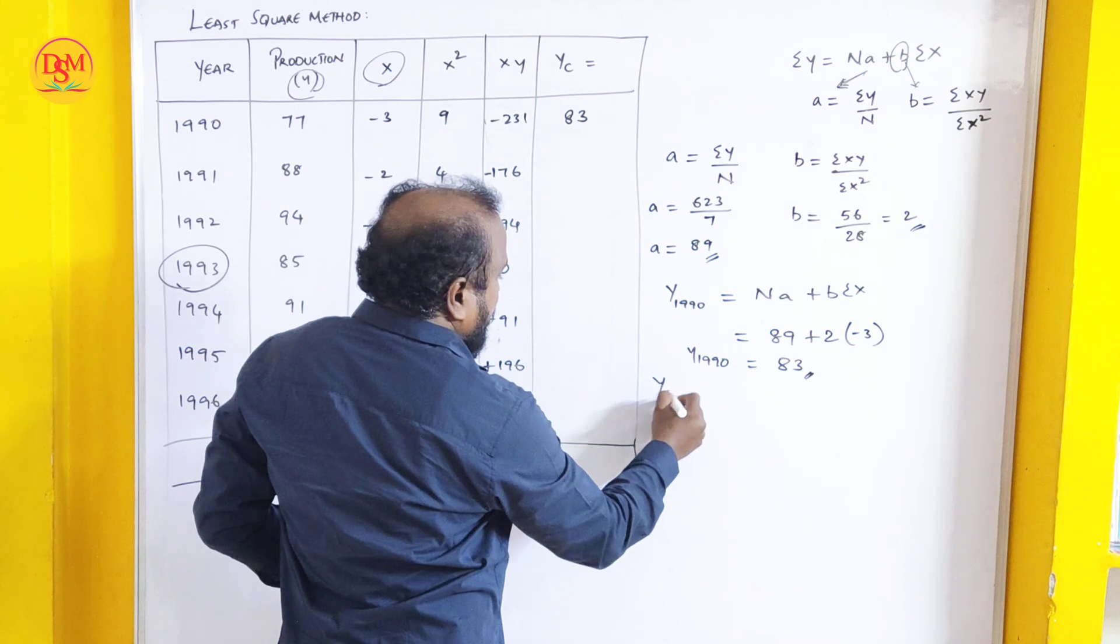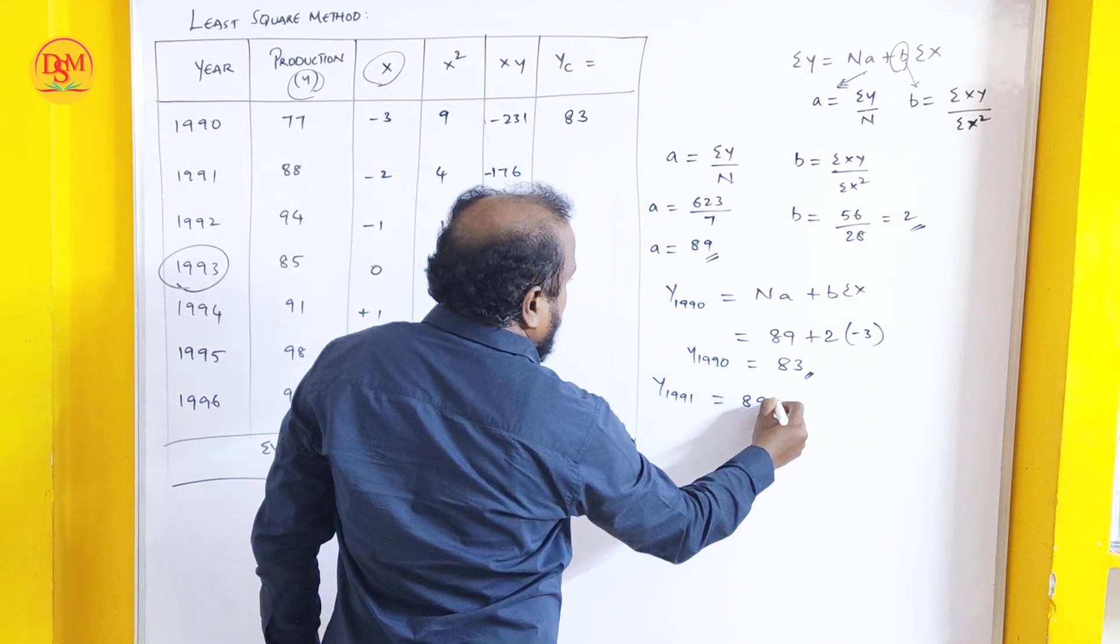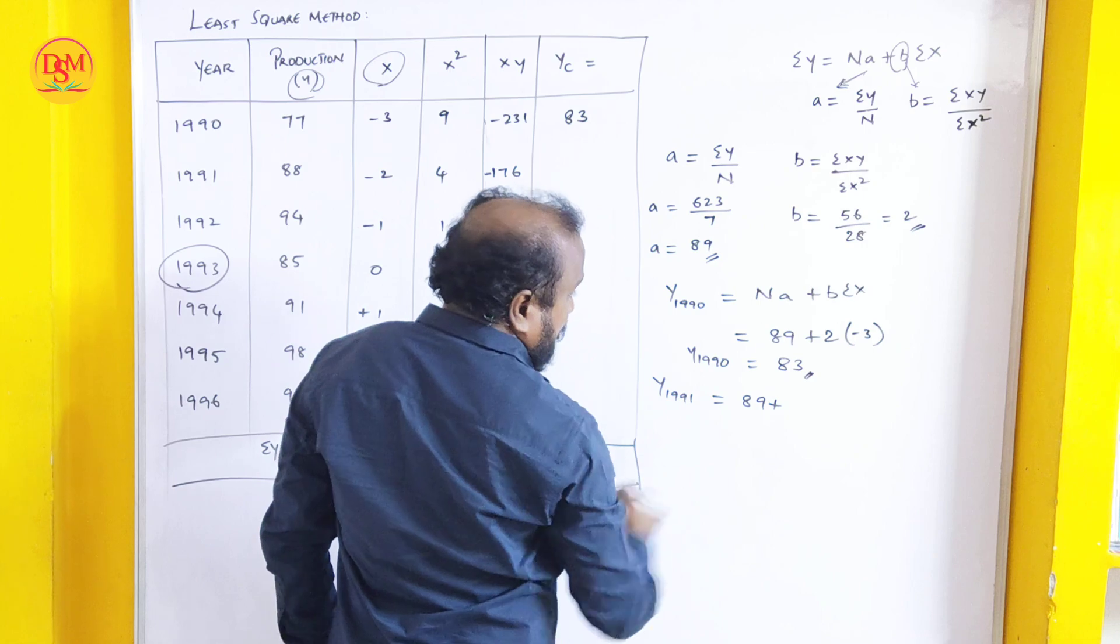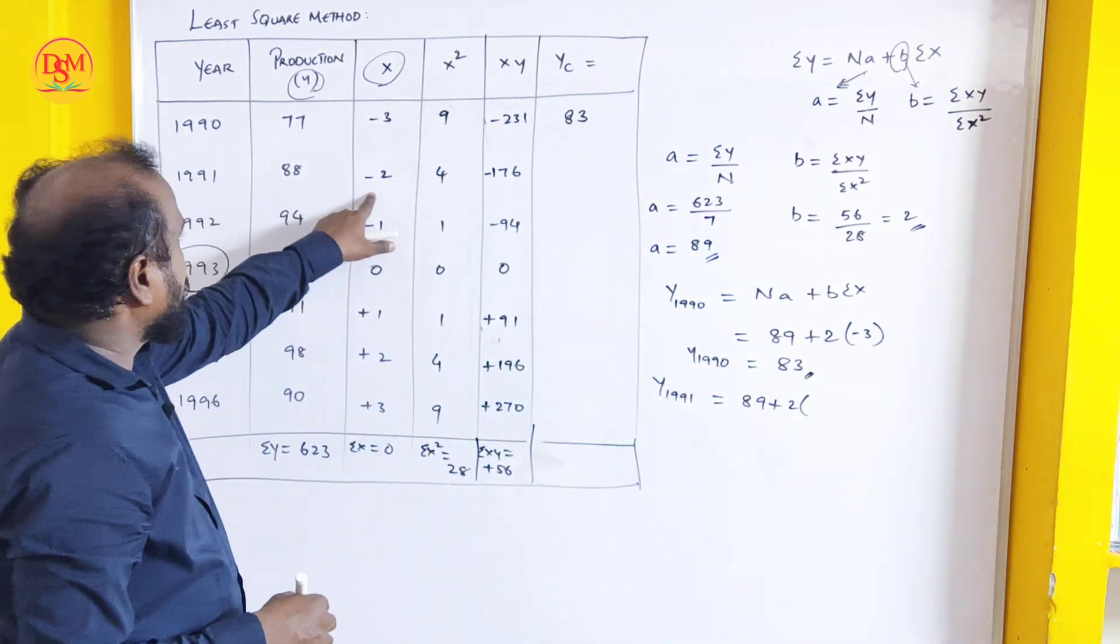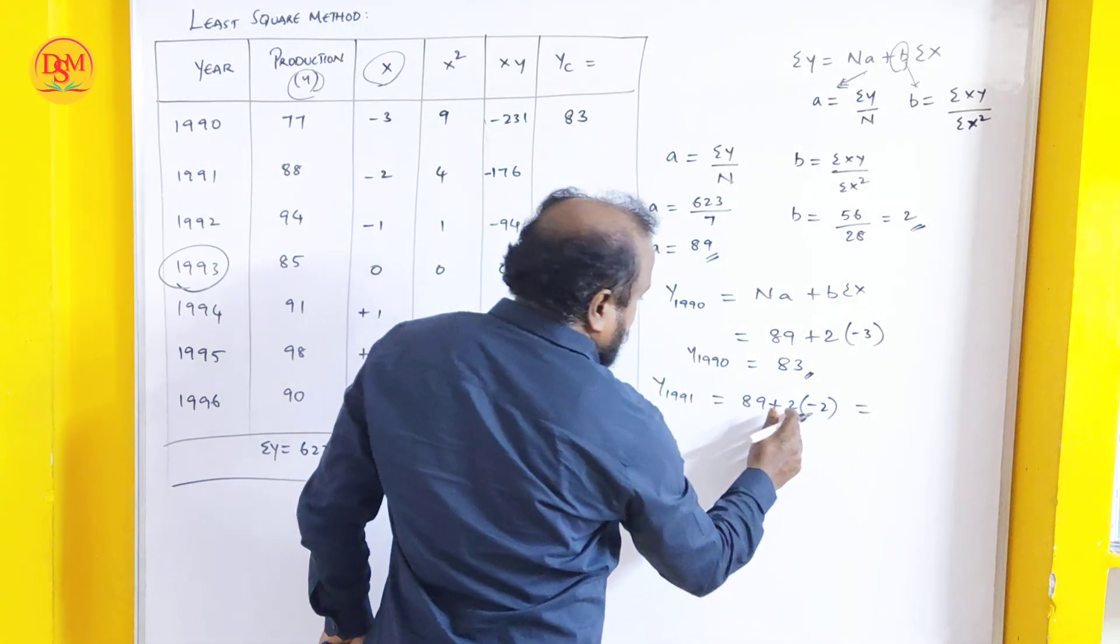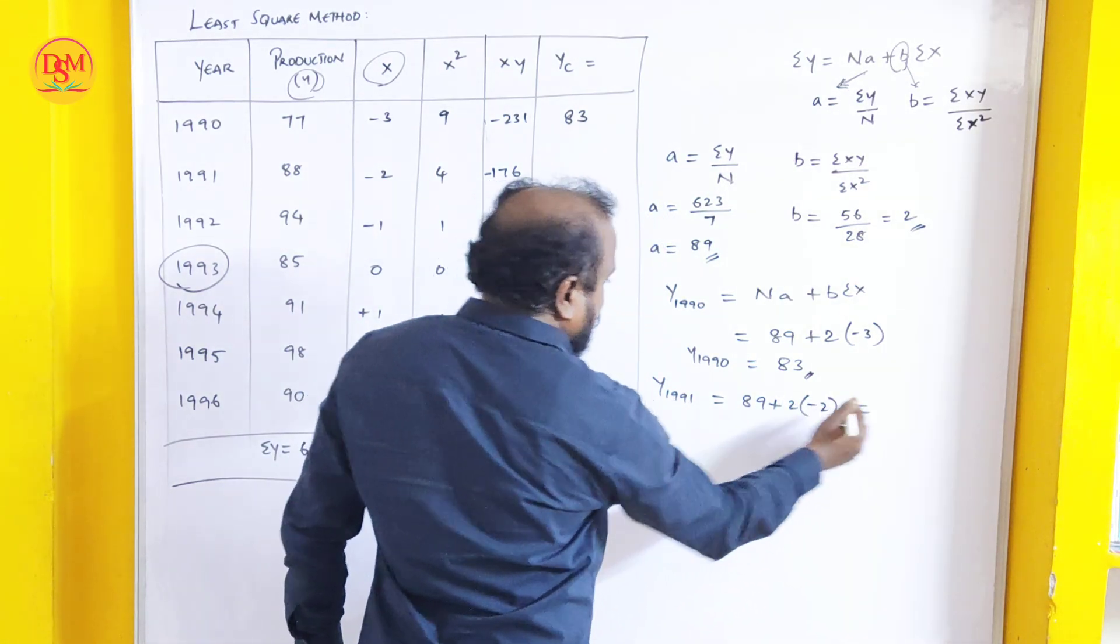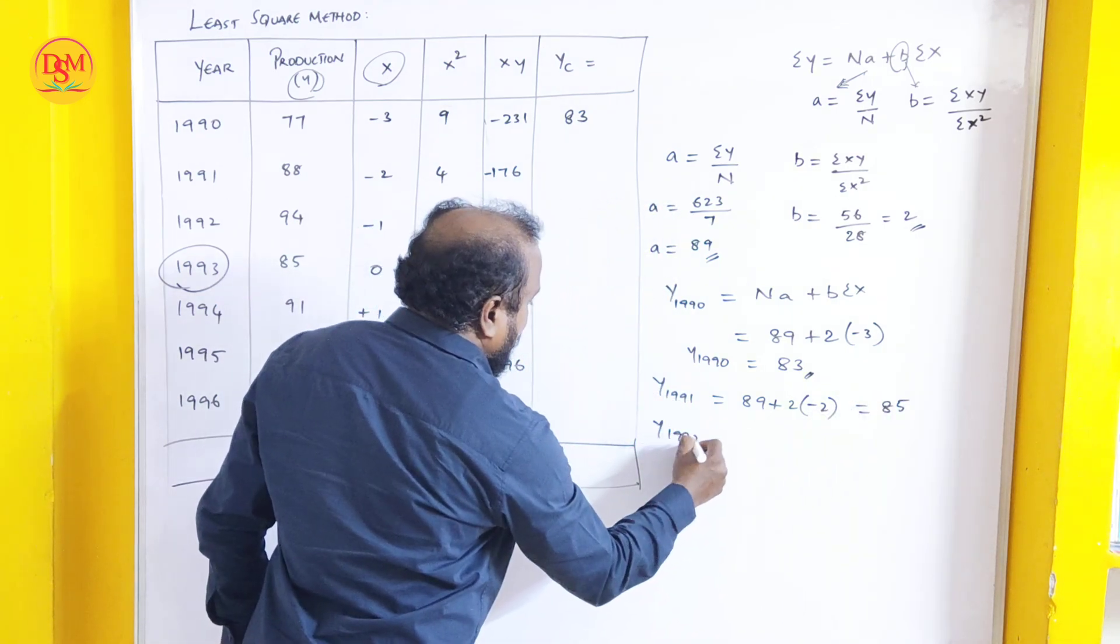Next for the year 1991, same: 89 plus 2 into sigma x. Sigma x for 1991 is minus 2. 2 into 2 is 4. 89 minus 4 is 85.